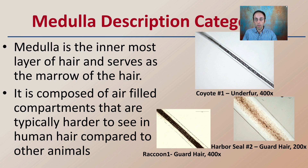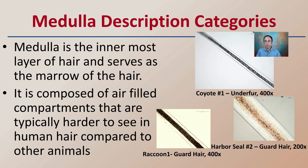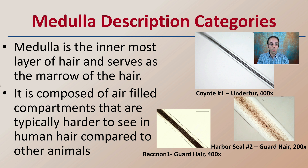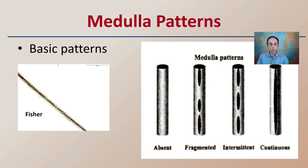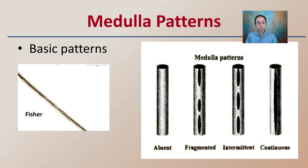The medulla description categories describe how we classify the different medulla regions. The medulla is the innermost layer of the hair, serving as the marrow — that center portion. It's composed of air-filled components that are typically harder to see in human hair compared to other animals. Looking at the coyote, the harbor seal, and the raccoon, we can see major differences in how we classify the different medulla patterns. Those patterns can be absent, fragmented, intermittent, or continuous. The Fisher cat is one example showing a unique medulla pattern at the microscopic level.